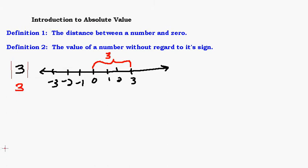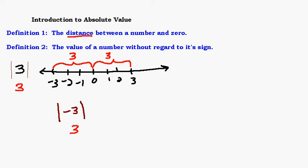What if we wanted to find the absolute value of negative three? That's the distance between negative three and zero. From negative three to zero, how many steps would that be? That would be three steps. The key here is distance, and when we're talking about distance it's always going to be positive — we don't really talk about negative distances.